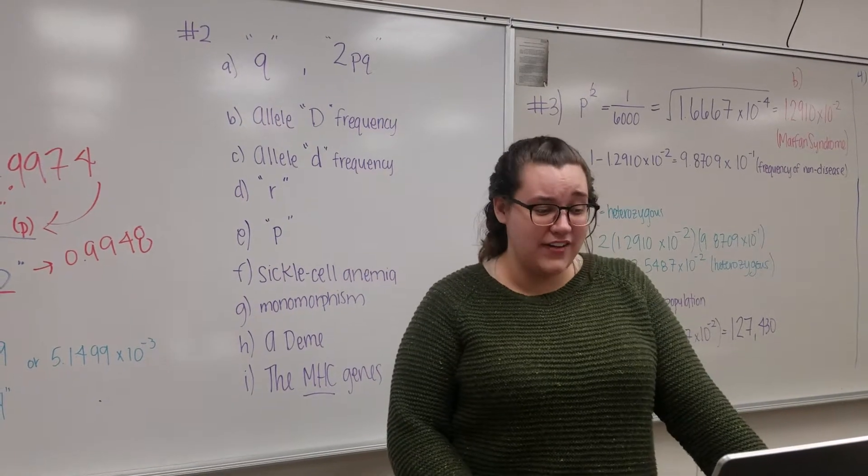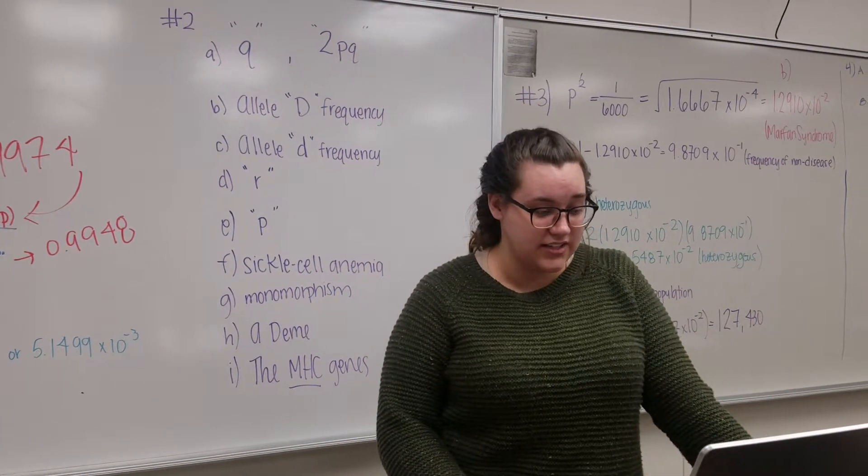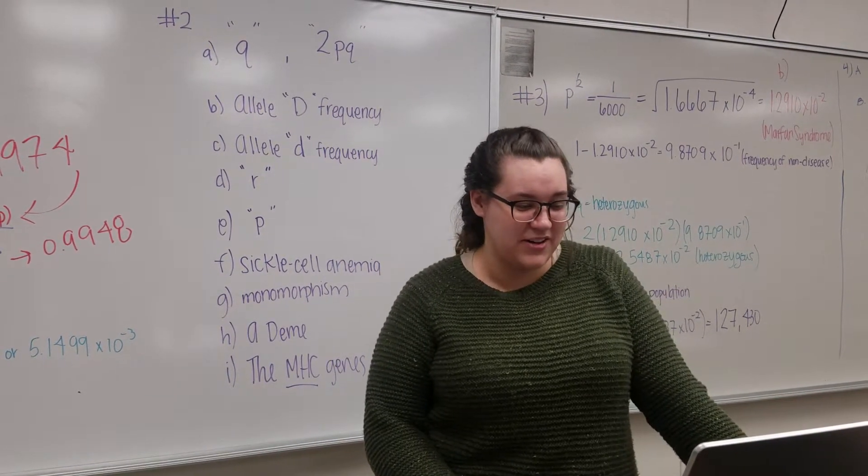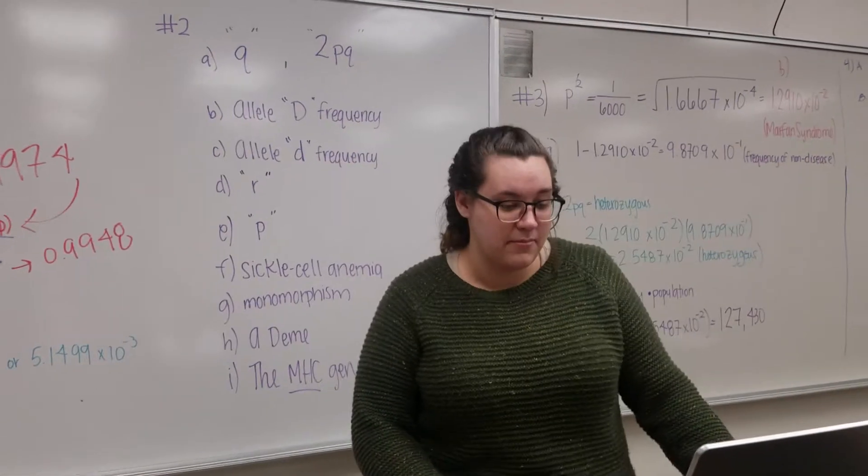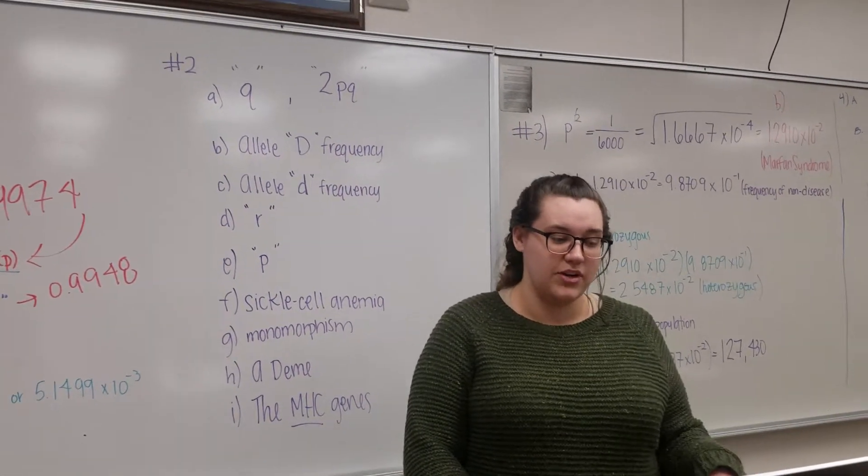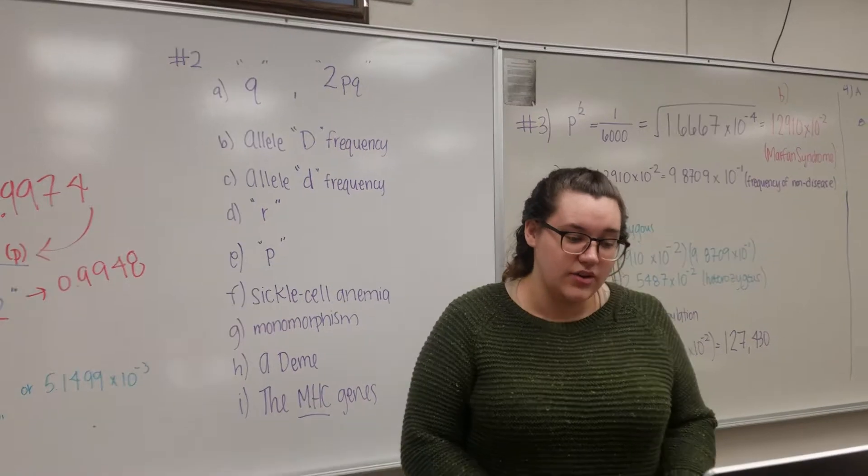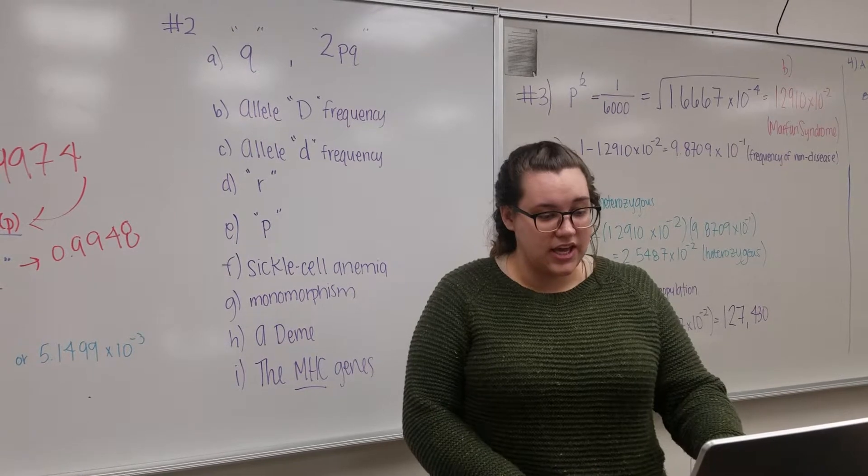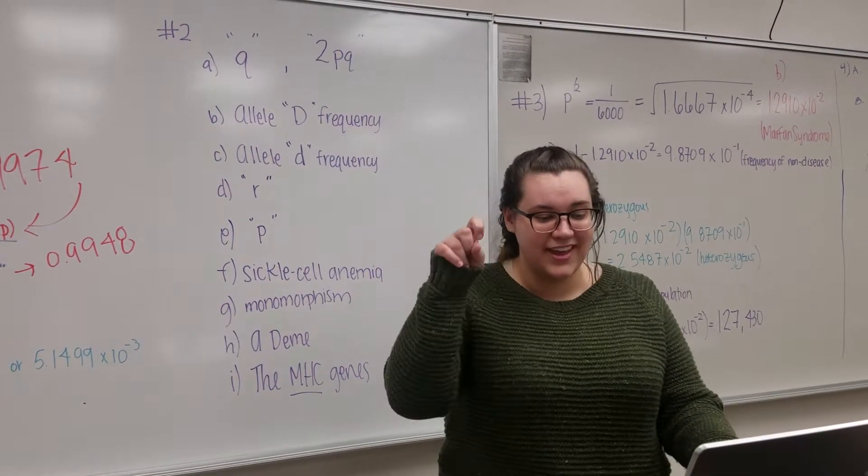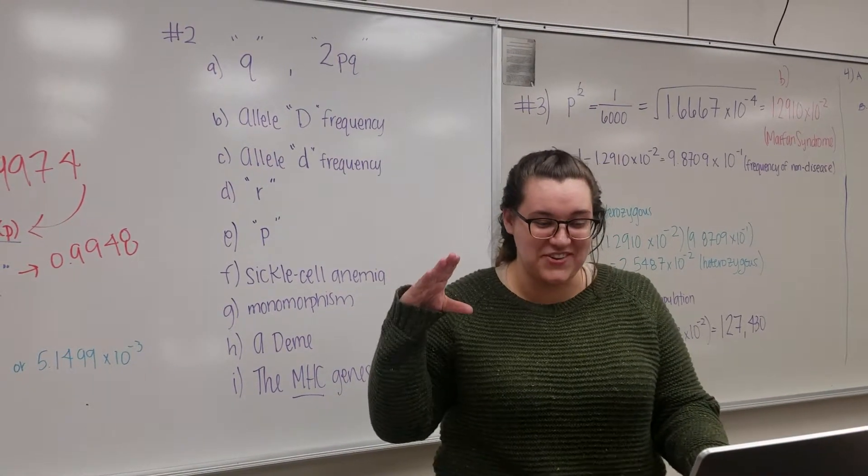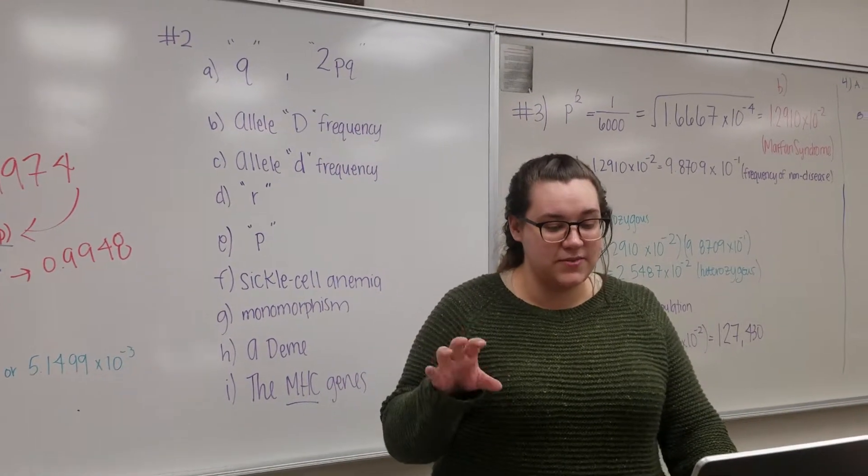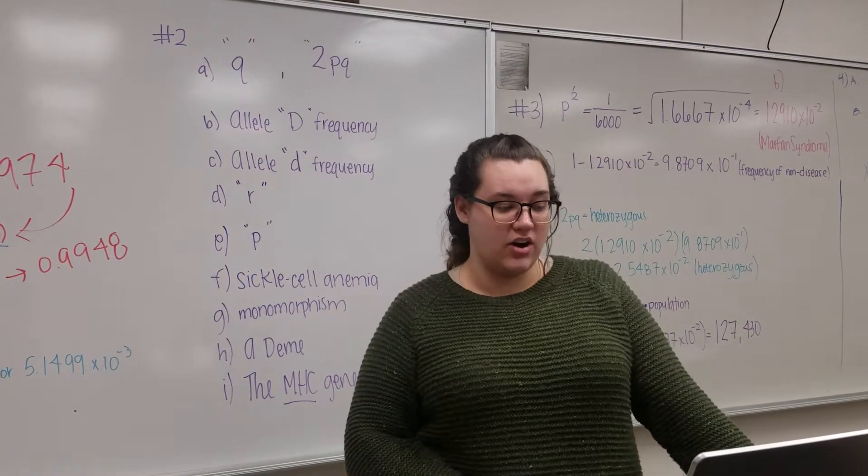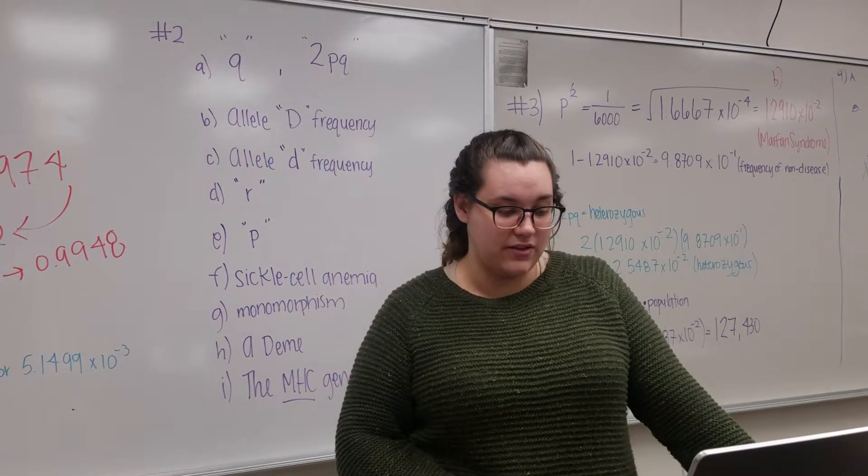The type of plumage found in Mallard ducks is determined by three alleles at a single locus. MR, capital R, produces restricted plumage. M produces Mallard plumage, and Md, recessive, produces dusky plumage. The restricted phenotype is dominant over Mallard and dusky. Mallard is dominant over dusky, so it's MR is greater than M. So MR is dominant, M is in the middle, and then MD is recessive. So we know that the R term in the Hardy-Weinberg equation best represents the frequency of the MD allele.